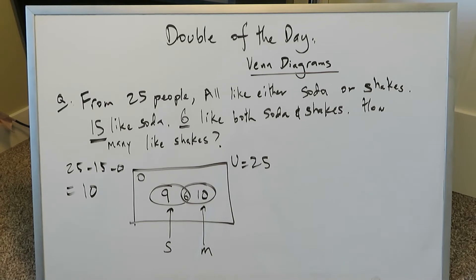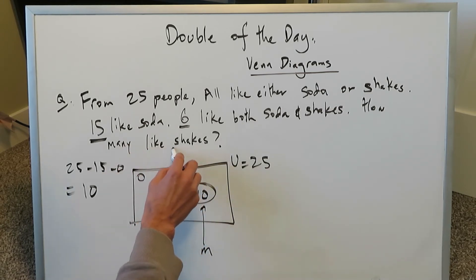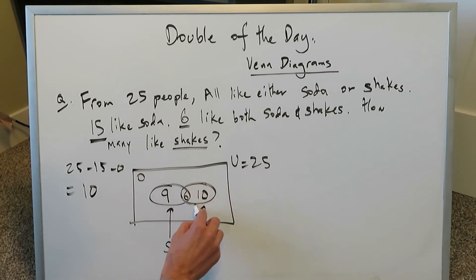That answers your question about how many like shakes, but it doesn't answer it properly. When it's asking how many like shakes, you have to take that in a general sense. How many people like shakes out of this 25? It must be the cumulative number of everyone in this bubble.